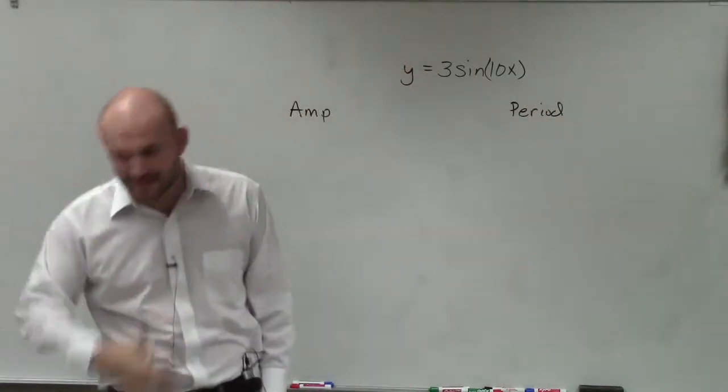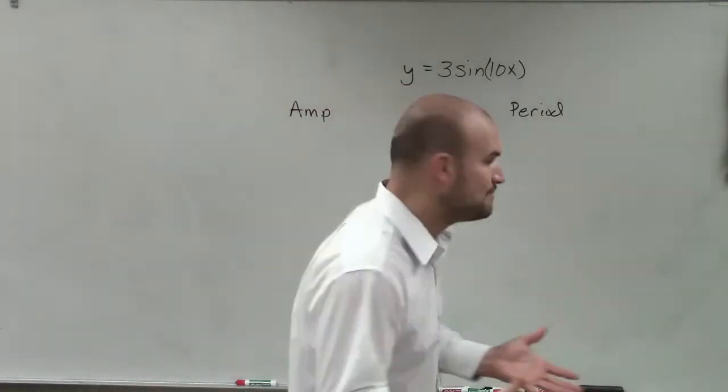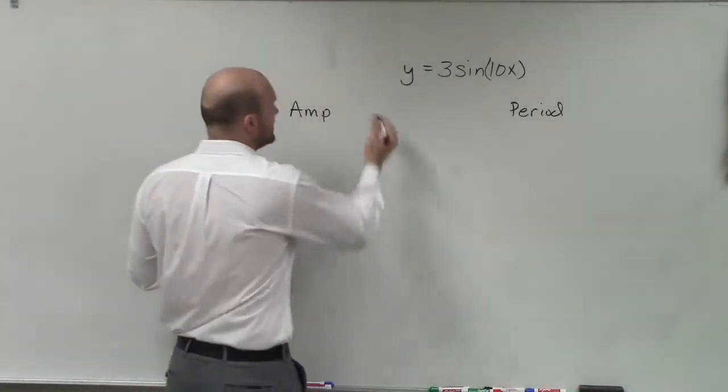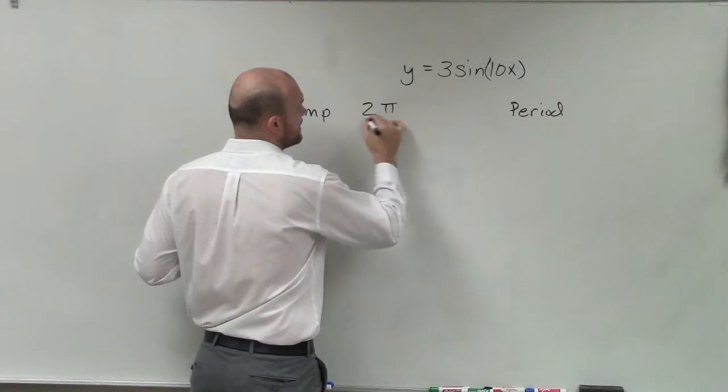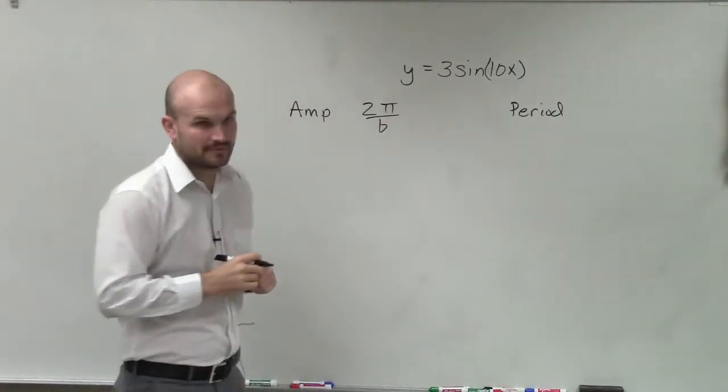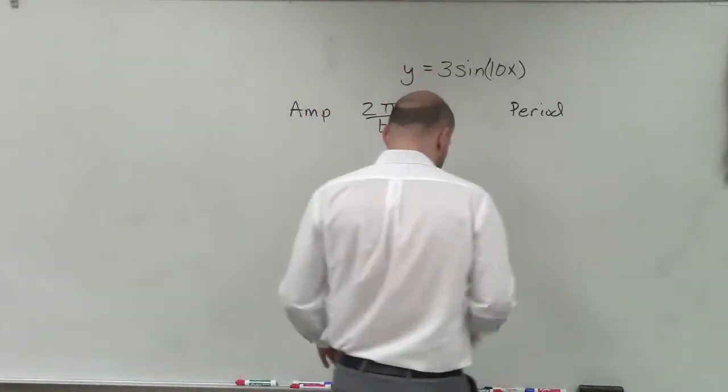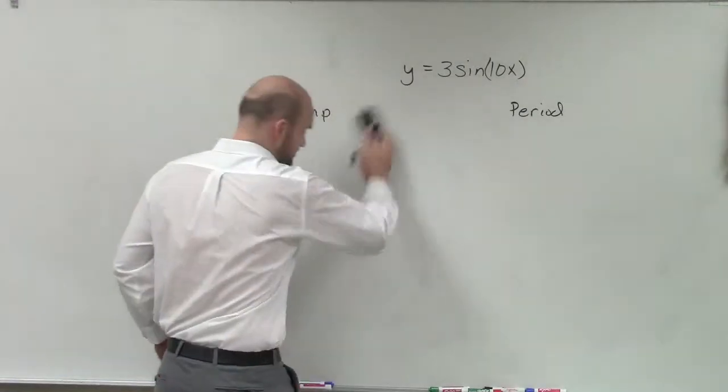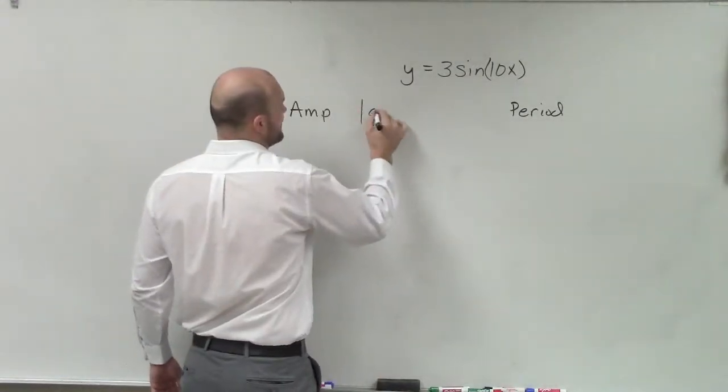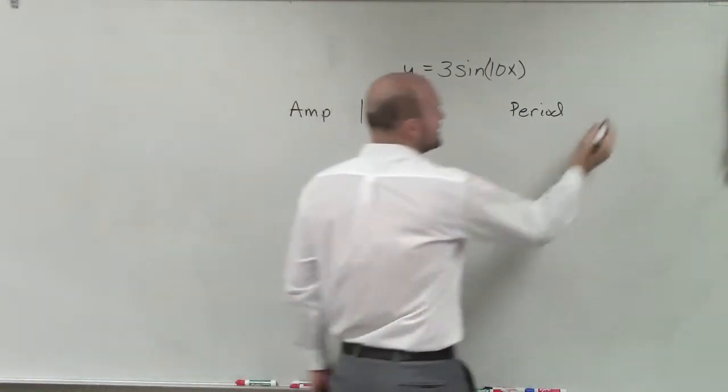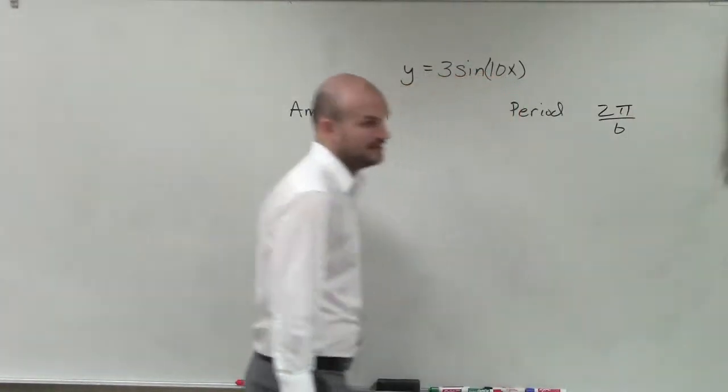So what we discussed two class periods ago, when determining the period for sine and cosine, all that is is 2π divided by b. And the period, I'm sorry, that's the other way around. The amplitude is the absolute value of a, and the period is going to be 2π divided by b.